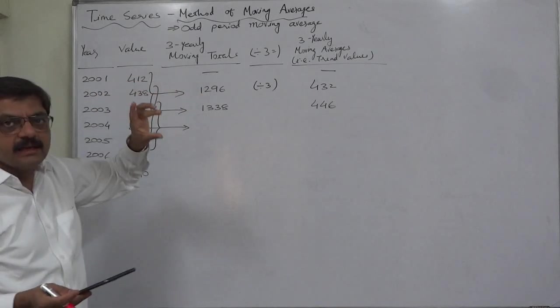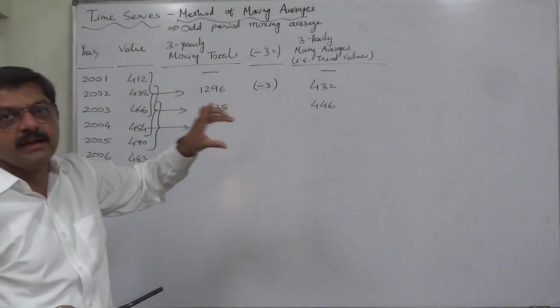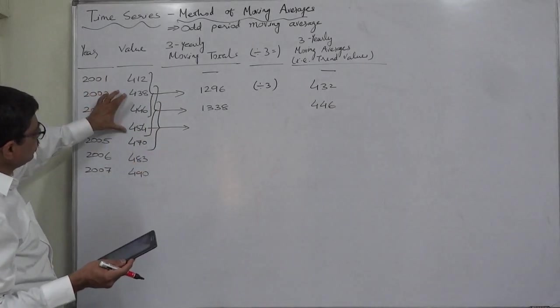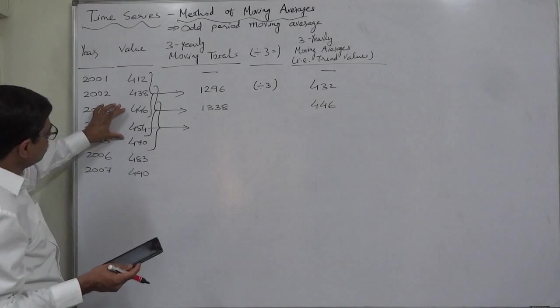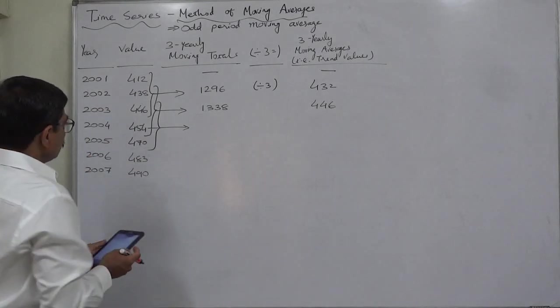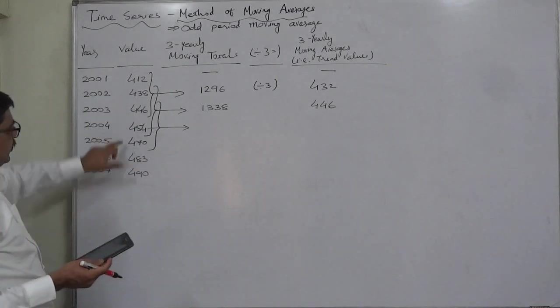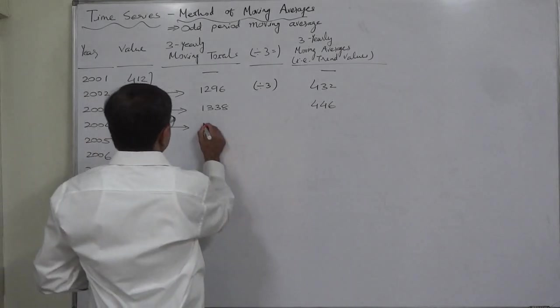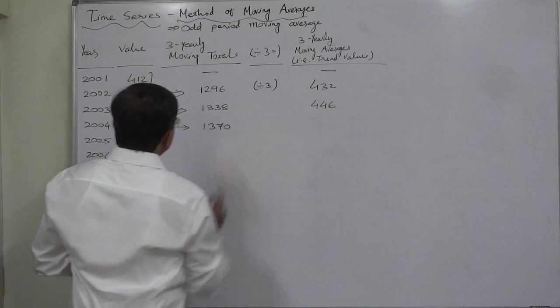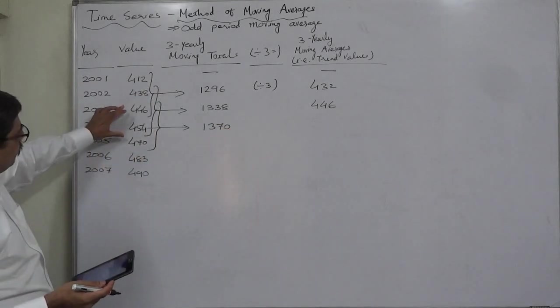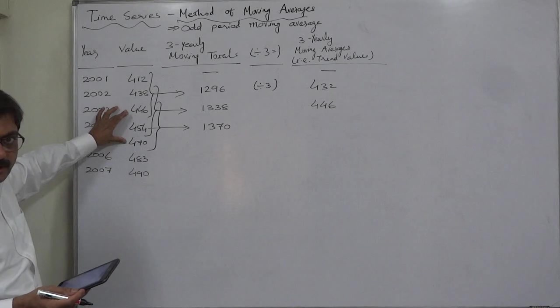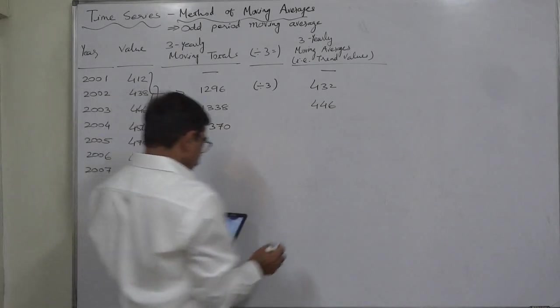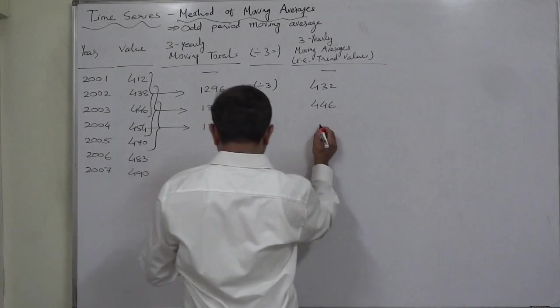And mind well, the total is always written in the middle of the periods. Three means it will be written against the second period or second year, every time in every block. In this three, this is the middle. In this three, this is the middle. In this three, this is the middle. So now we are dropping 438 and adding 470. The total will be 1370, or you can simply get the total of these three with the help of your calculator. Divide this by three again because this is total of three. It will be 456.67.